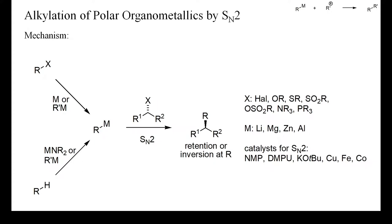Polar organometallics are usually prepared from organic halides or sulfonates by treatment with a metal or with another polar organometallic reagent.